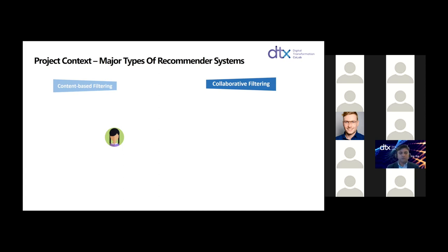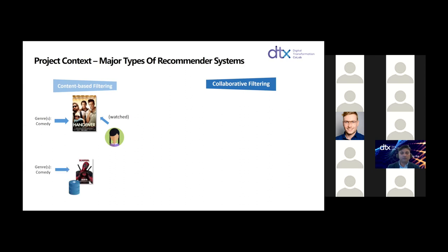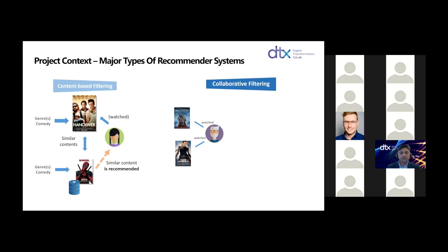There are mainly two types of recommender systems. One is the content-based filtering system and another is the collaborative filtering system. In the content-based filtering system, we analyze the user's preferences and based on those preferences we present new recommendations to that particular user. In collaborative filtering, we analyze different users' preferences and try to find similar users based on the contents they watch, and based on that we suggest contents to different users.